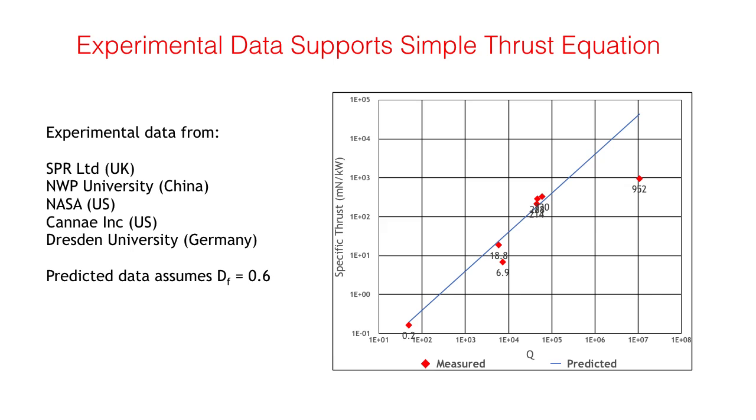The acid test for any scientific theory is, does it make predictions which are demonstrated by experiment? Experimental data has been published for seven different M Drive thrusters from five organizations worldwide. The chart shows specific thrust, that is thrust in million newtons per kilowatt of input power, plotted against the measured Q of the cavity.